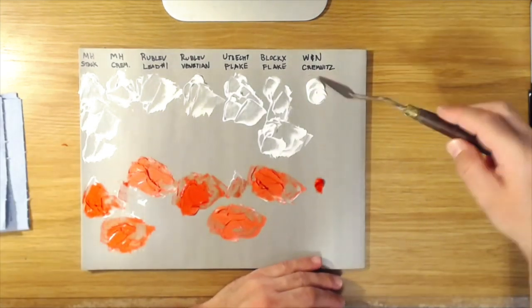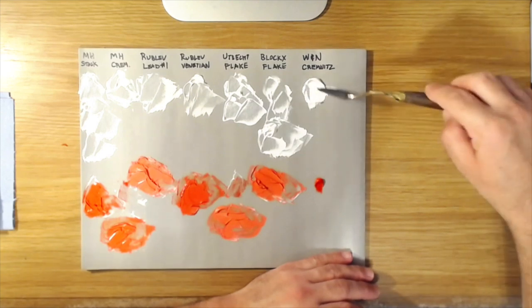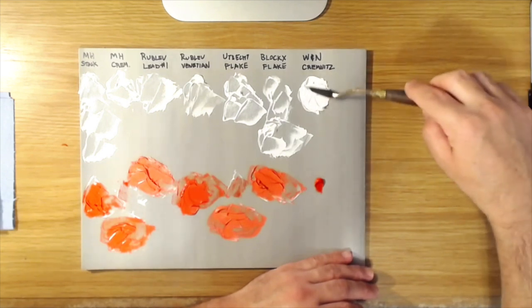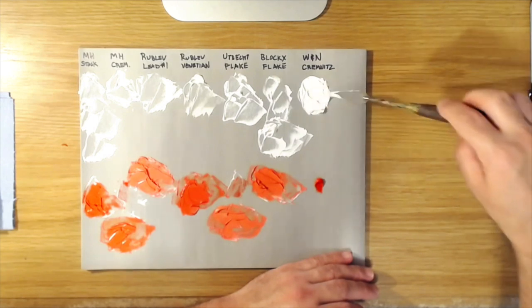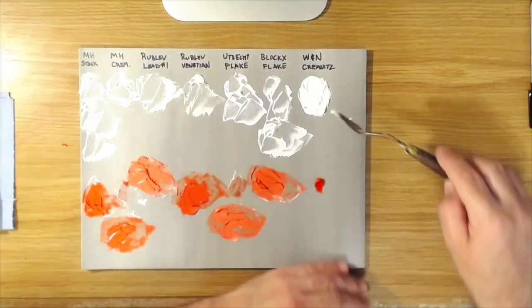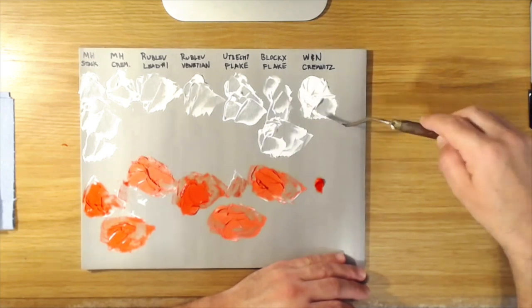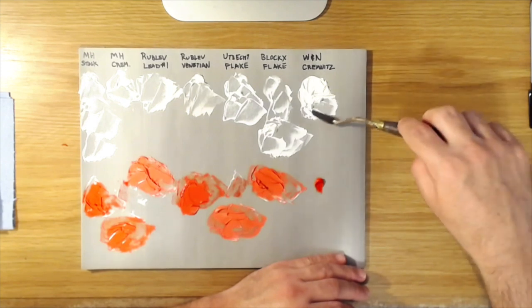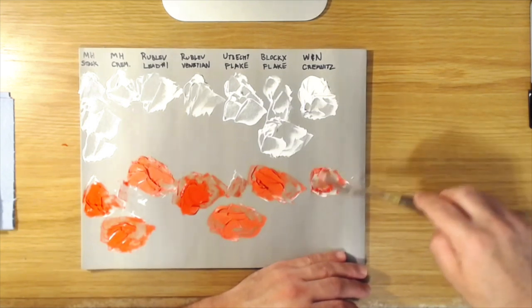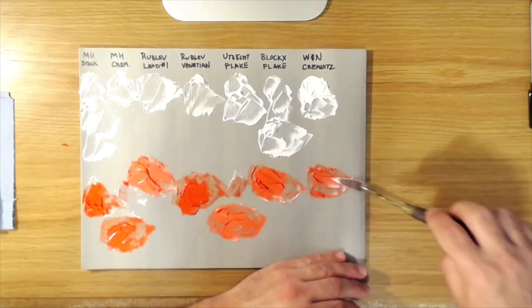Last but not least, we come to the Windsor and Newton Kremnitz White, which is a little stiffer than some of the others, but it's a nice consistency. It's more of like a standard oil paint consistency. It's definitely not the ropey lead white that the Venetian and the stack lead white has. And again, like I said, this will work in a pinch, but it's not my favorite because I feel like the quality of it is not as good as it used to be, because they moved their manufacturing to China, probably because of the EU laws.